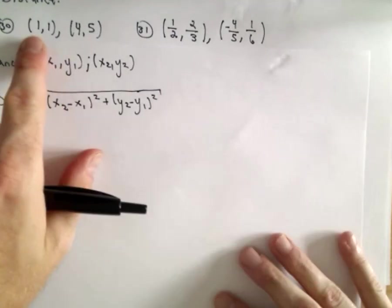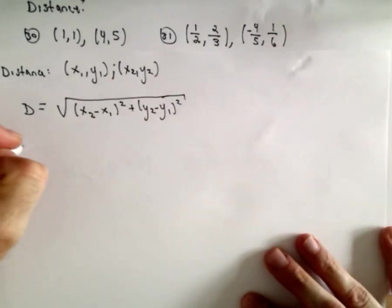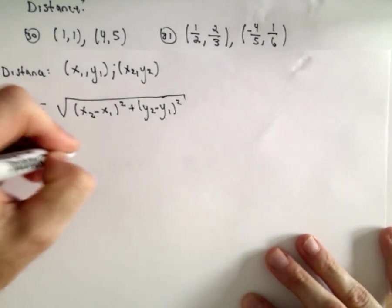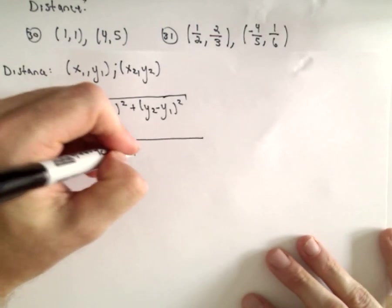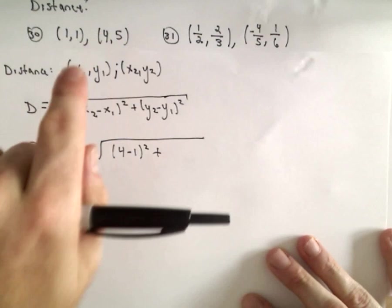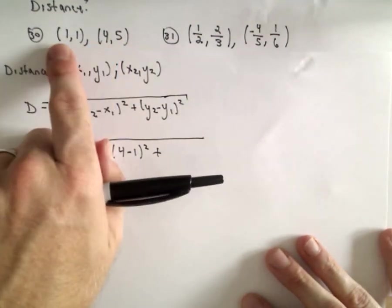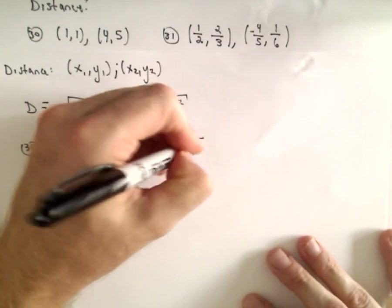So, maybe I'll call the first point x1, y1, and the second point x2, y2. So for number 30, if we subtract the x-coordinates, we'll get 4 minus 1 squared, and then if we subtract the y-coordinates, we'll get 5 minus 1 squared.